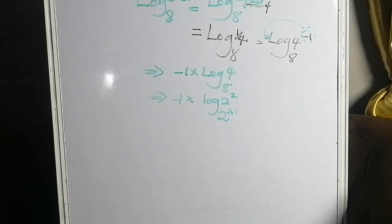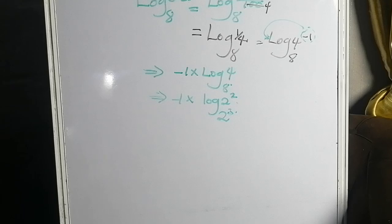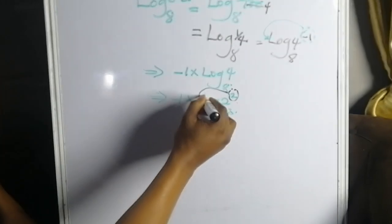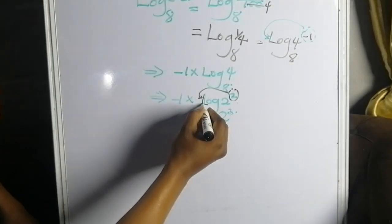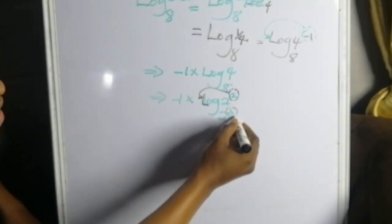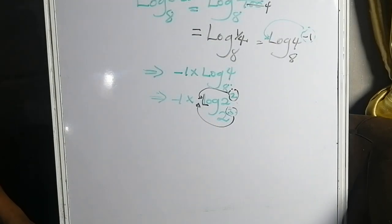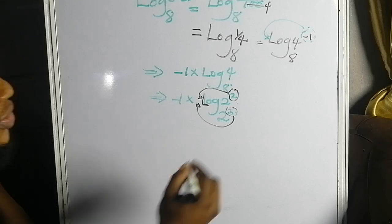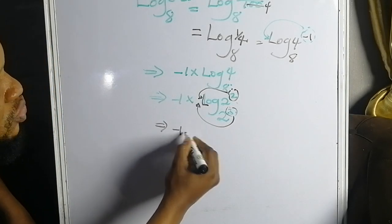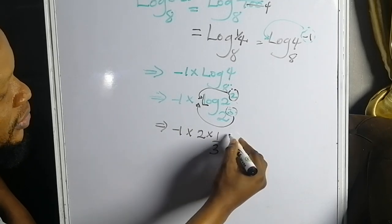Now apply the power-base law of logarithms. The power of the number comes straight to the front of the log, while the power of the base comes to the front as its inverse. So the 2 from the number comes to the front, and the 3 from the base comes as 1 over 3.